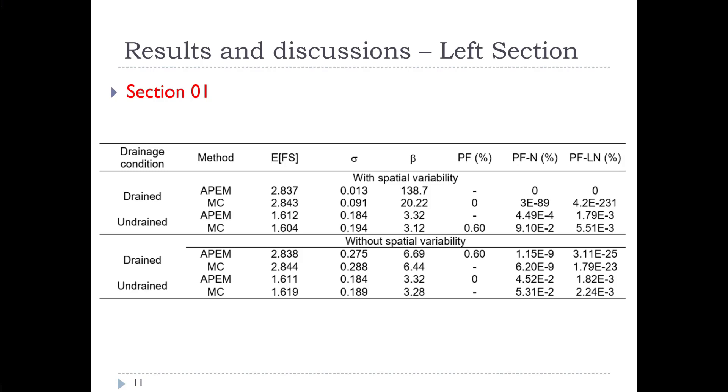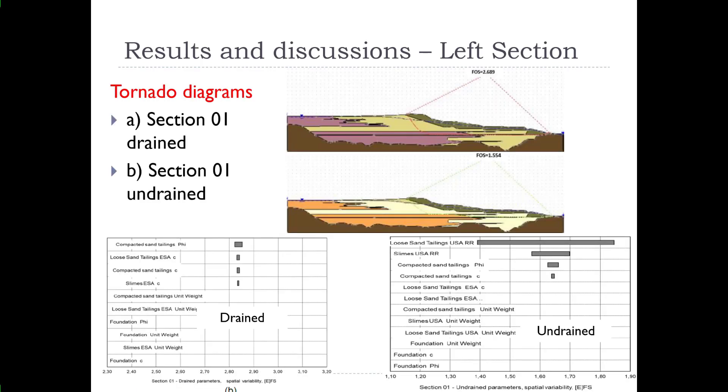If we perform the analysis for section 01 and do a probabilistic analysis, this shows the average factor of safety for undrained and drained for both the methods of alternate point estimate method and the Monte Carlo method. We can see we have high average factors of safety when average parameters are used. Then you can see on the right hand side of the chart the probability of failure in terms of percent for both normally and log normal distributions assumed. The upper part of the chart is with spatial variability accounted for and the bottom part is without counting for spatial variability. In this we see very low probabilities of failure in all cases here, extremely small values. For the left section, probability of failure is quite low.